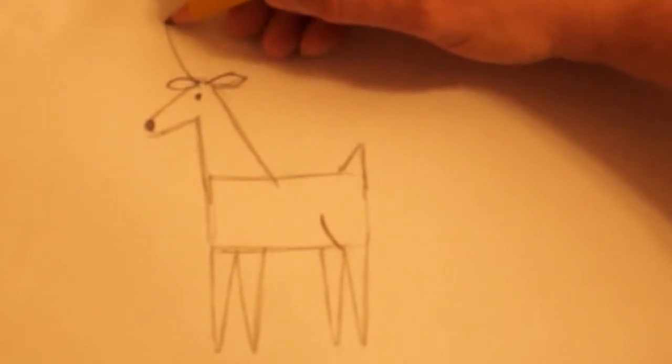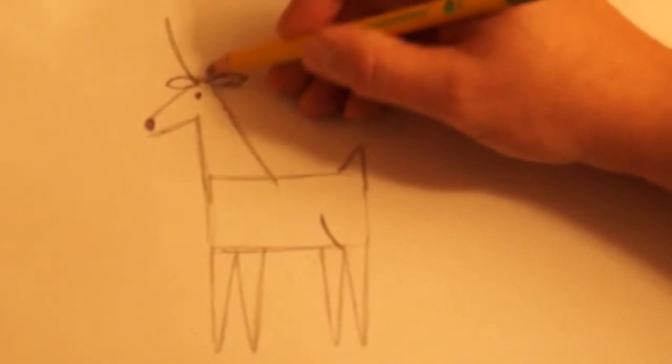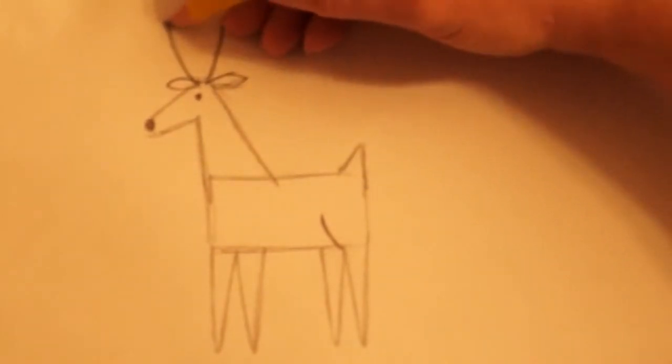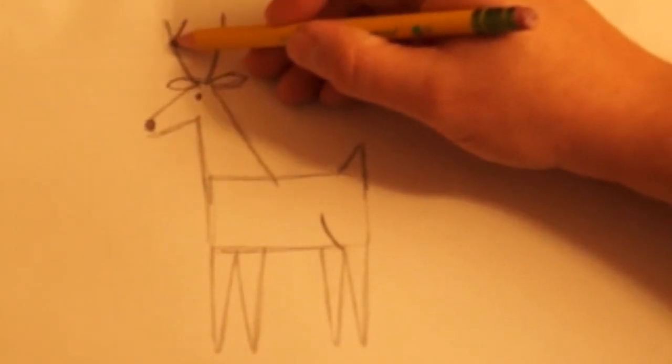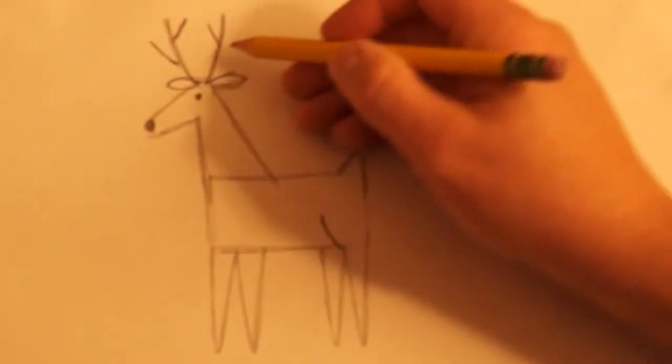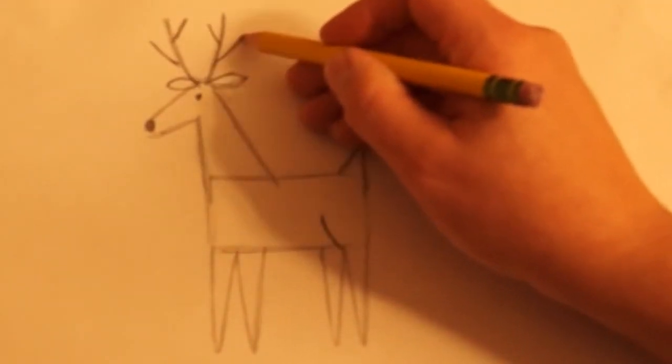This is a buck, a boy deer. So I'm going to make antlers. If you wanted it to be a doe, then just leave the antlers off. Okay, so there's the antlers.